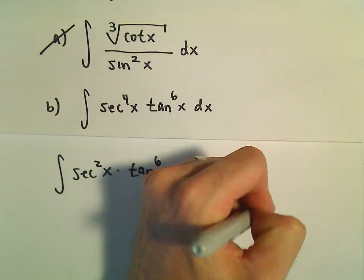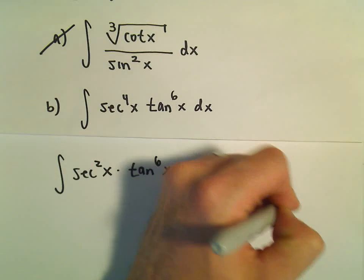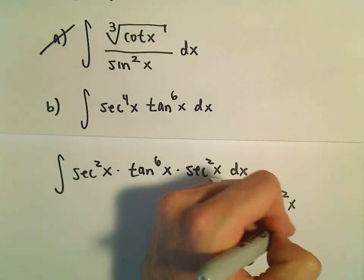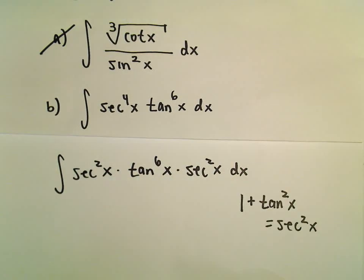So recall that 1 plus tangent squared x equals secant squared x. So that's going to be the identity we're going to use here.